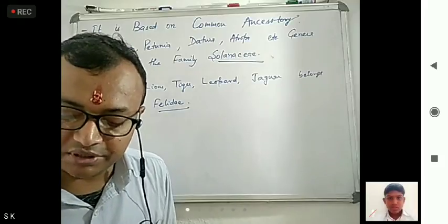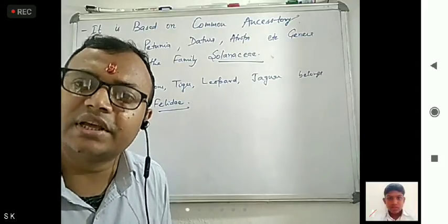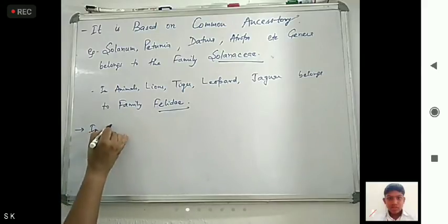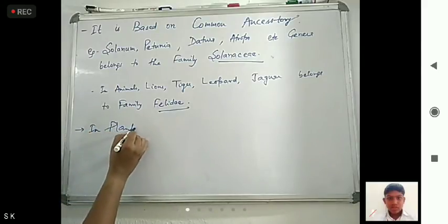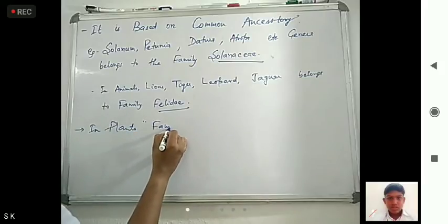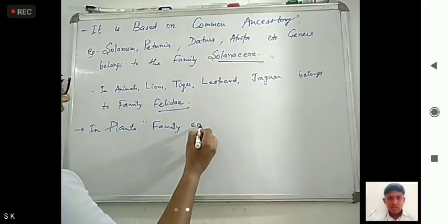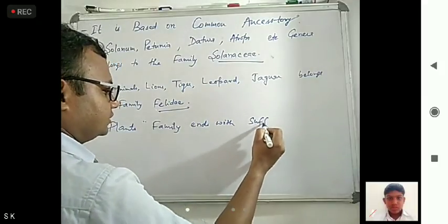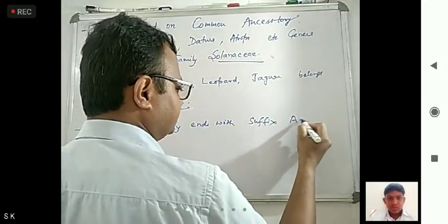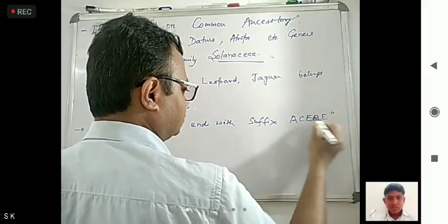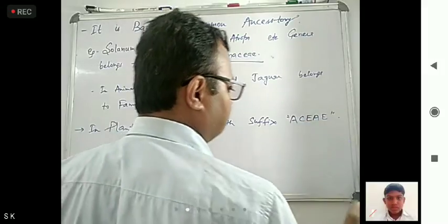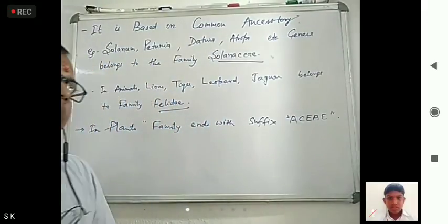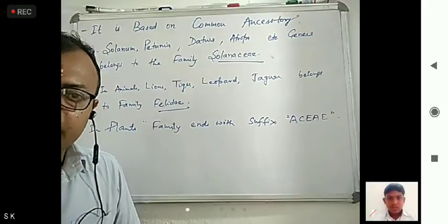Now the common rules: in plants, the family name ends with the suffix '-aceae'. For example, Solanaceae, Poaceae, Malvaceae — many are there. So in plants, family ends with the suffix '-aceae'.